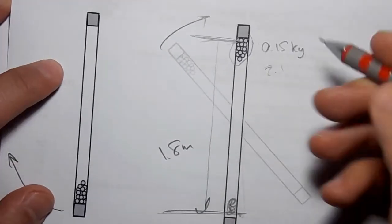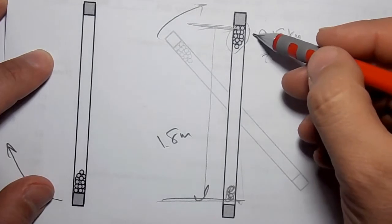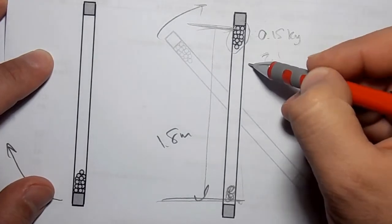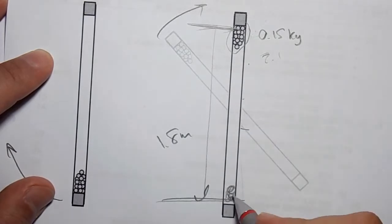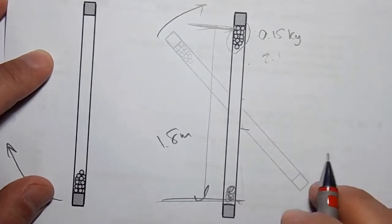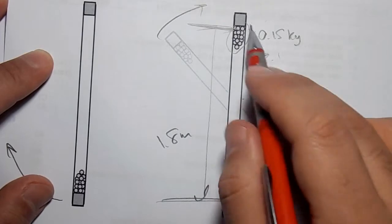As the sphere descends, all the potential energy it loses converts to kinetic energy. So it hits the bottom with a high speed.